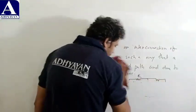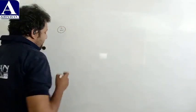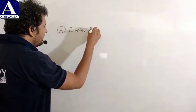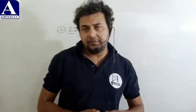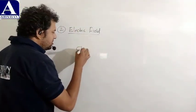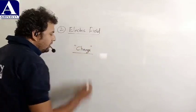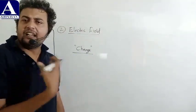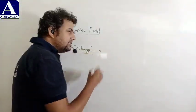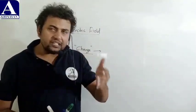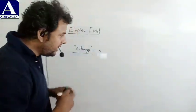Electric field को समझने के लिए इसके elementary part को, that is charge को थोड़ा सा जान लेते हैं। Charge किसको कहें? तो यह किसी matter का सबसे basic physical property होती है जो force experience करेगा अगर आप इसको electric या magnetic field में रख दोगे। Charge is a basic physical property of any matter, which experiences a force when it is kept in the electric or magnetic field। यह charge का definition होता है।